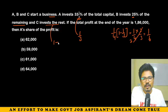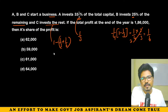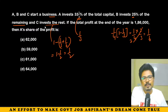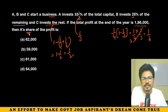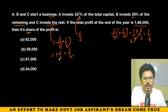C invests the rest. A has 1/3, B has 1/6, so together they have 1/3 + 1/6 = 1/2. Therefore C's share is 1 minus 1/2 = 1/2. Now we need to find A's share of profit at the end of the year.